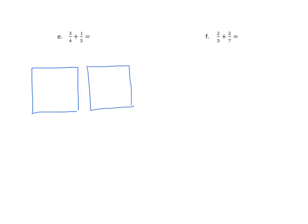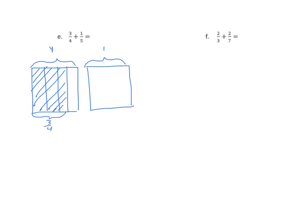Let's make our representations once again — two rectangles, each bracketed and labeled one. We're going to start with the first one. The denominator is four, so we're going to partition it into four equal parts using three vertical lines. This time we have three-fourths, so we're going to shade three out of the four partitions and label it three-fourths. For one-fifth, we're going to partition with four horizontal lines, dividing it into five equal parts. We'll shade in one because the numerator is one, and label it one-fifth.